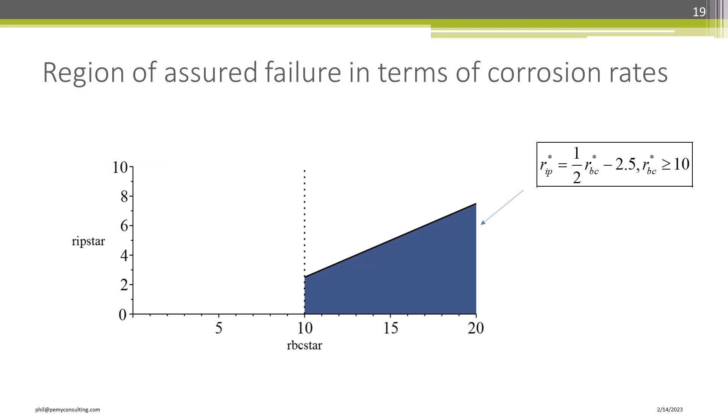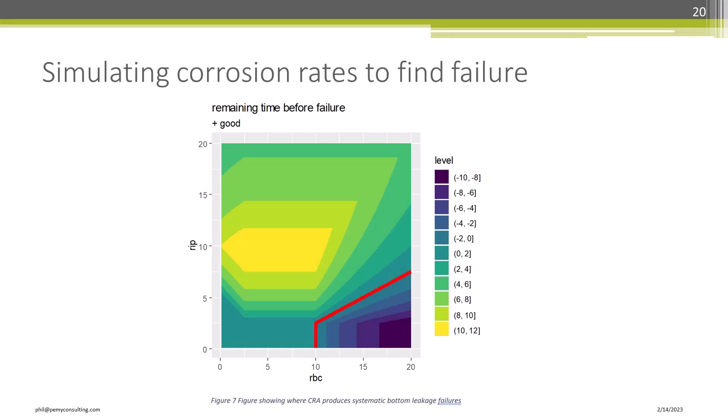The minimum corrosion rate, as mentioned before, is shown at 10 MPY on the bottom LCR. We have simulated several hundred thousand cases randomly choosing top side and bottom side corrosion rates from 0 to 20 MPY, and looked at the failure ratio. Observe the boundary below which failure occurs. The failure boundary is exactly the same as derived previously. The region above the red line is safe, but the region below is where failure occurs.